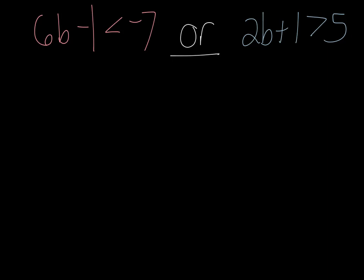Your first step will be to solve the inequality that you see in pink and solve the one in blue. If I'm going to solve the one in pink, I will add one to each side. I would get 6b is less than -6, divide both sides by 6. So I end up with b is less than -1.